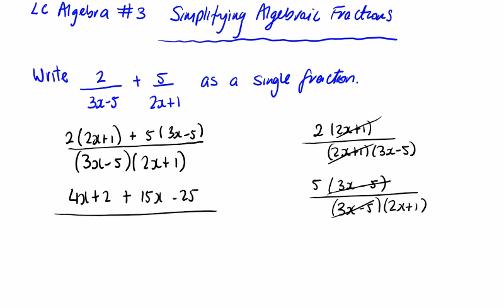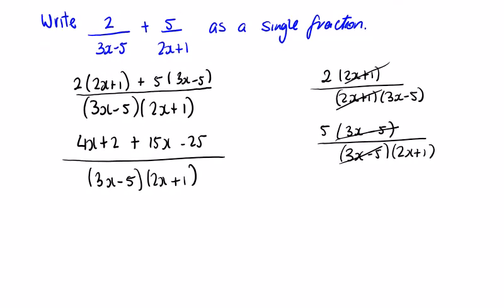All over — if you're not asked to simplify the bracket, or if you're asked to write the answer in a particular format, we just leave the denominators the way they are. The top line becomes 4x plus 15x, which is 19x, and minus 25 plus 2 is minus 23. They're both prime so it doesn't simplify any further, all over (3x minus 5)(2x plus 1).